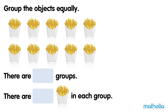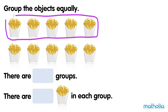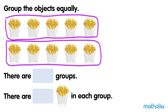Group the objects equally. There are 10 boxes of french fries. Let's make groups of 5. 1, 2. There are 2 groups. There are 5 boxes of french fries in each group.